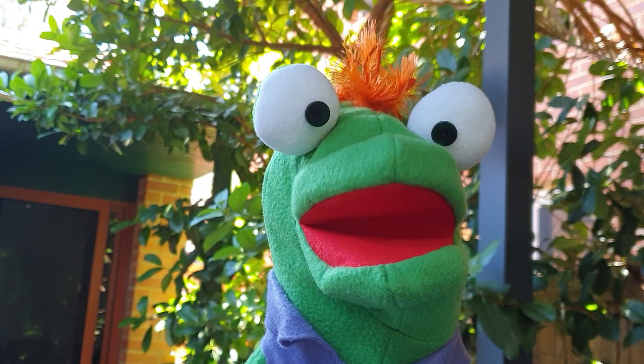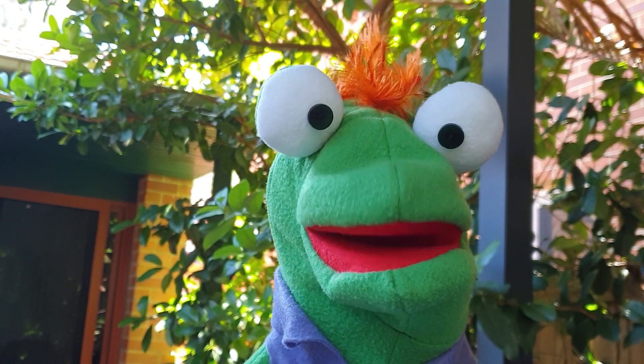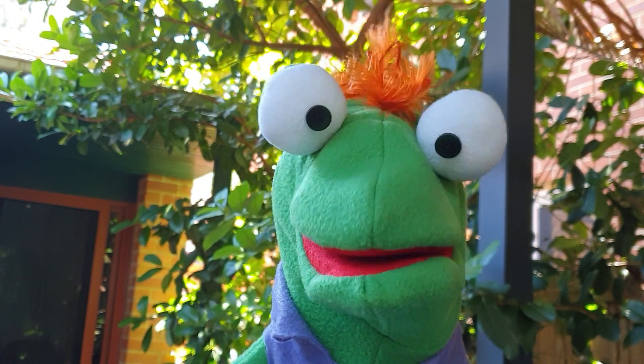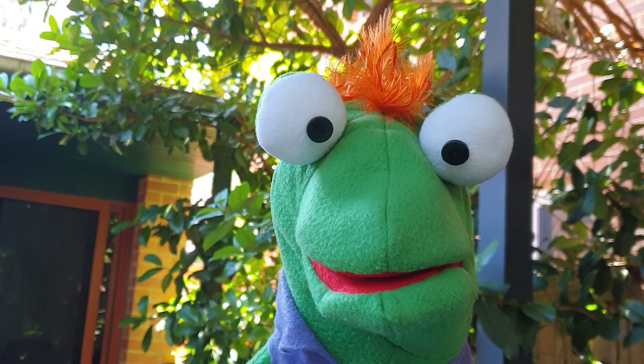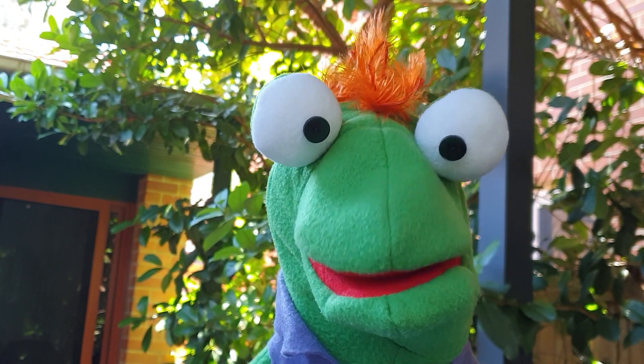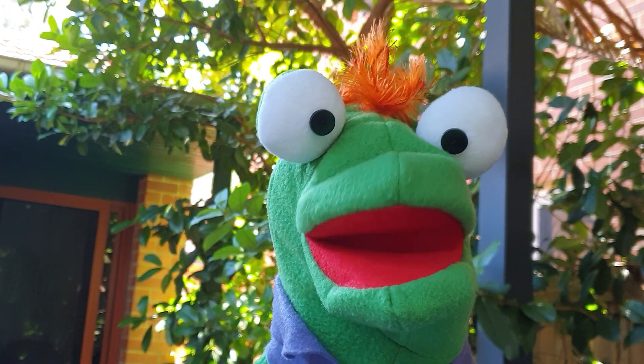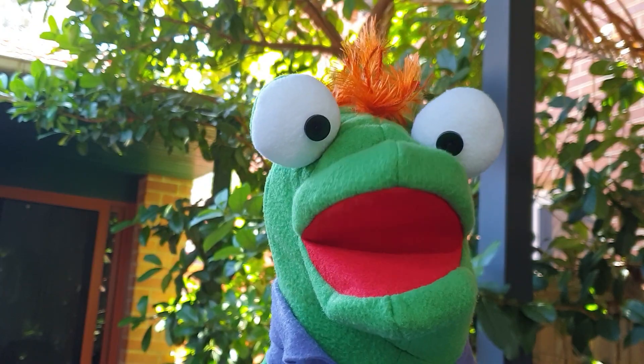Twelve divided by four equals three with no remainder. Then twelve is called a multiple of four.